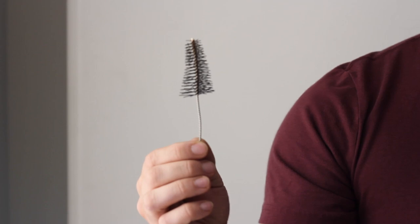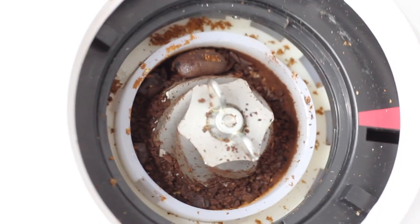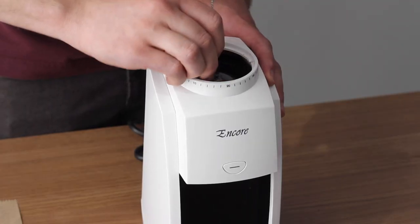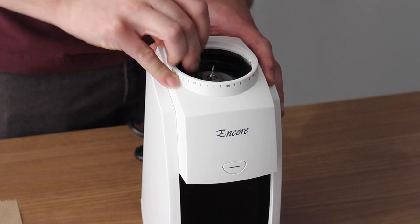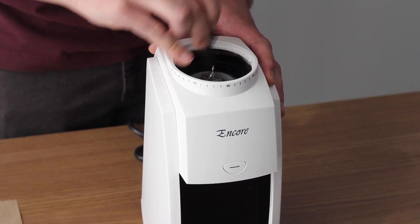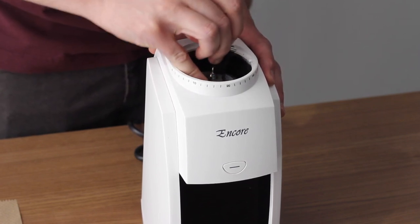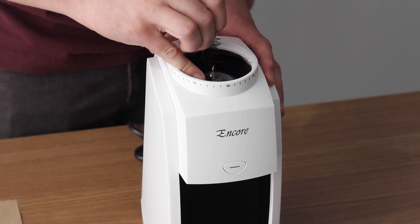Once all of those have been removed, we're going to want to use the wire brush that came with your Encore to knock loose any coffee grinds that are stuck around the edges of the cone burr. So if you just go kind of up and down and you can poke into it to get them loose. Depending on the severity of the clog, you might have to do this more or less.